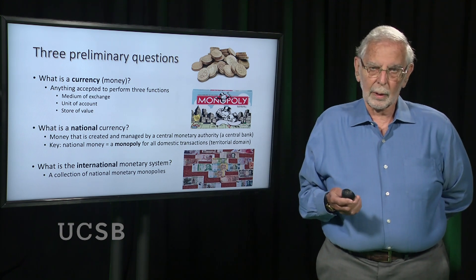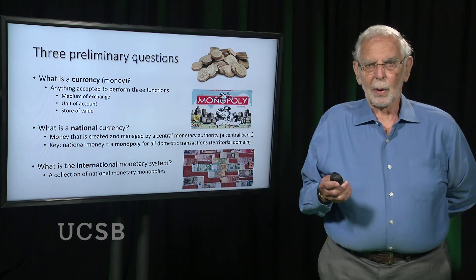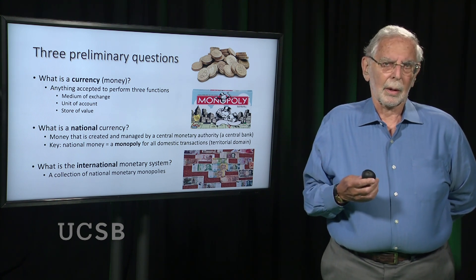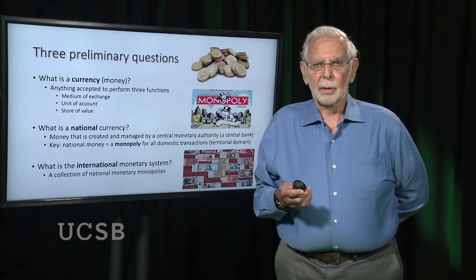Every beginning student in economics — and I began life as an economist — is taught the diamond-water paradox: that diamonds have such a high price relative to water, at least in most parts of the world other than Death Valley. Yet from the point of view of what we need to live, water has very high value while diamonds are not truly necessary. The answer to this paradox is simple: it's a matter of relative scarcity. Diamonds are scarce; water is in most places abundant enough to live on, and that makes the difference in price.